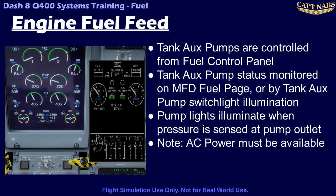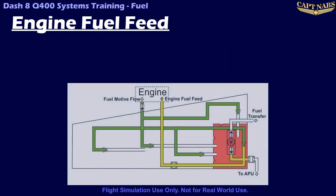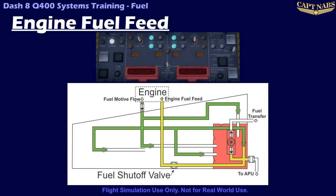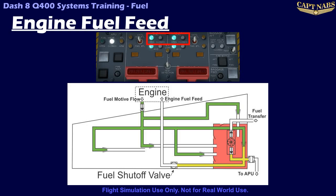A sensor measures fuel pressure on the output side of the pump and will only illuminate the switch light and show on the MFD when the output pressure is high enough to indicate the pump is running properly. Each engine has a fuel shutoff valve located in the fuel line as it enters the nacelle. The fuel shutoff valve is controlled by the corresponding red pull fuel shutoff handle, also known as the T-handle, located on the fire protection panel. The valve is normally open at all times, and the status of each valve can be checked on the fire protection panel: white light for closed, green light for open.